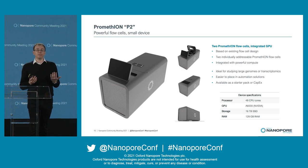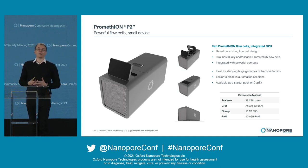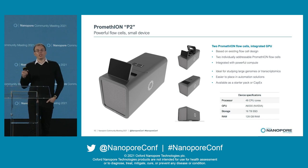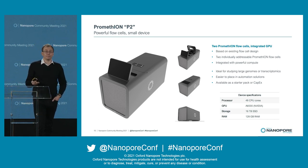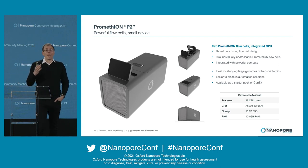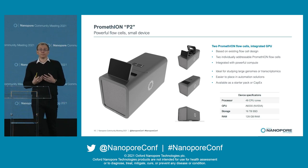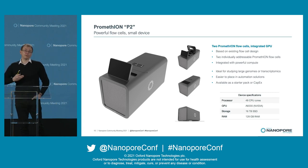Moving on to instruments. This is the Promethium P2, which Clive announced at London Calling in the summer. We think this will be really popular — it really leverages the cheap cost per gigabyte of Promethium. We know people like that, but we also know that not all labs need a P24 or a P48. Not all labs have that amount of throughput. This runs two Promethium flow cells and has two configurations.